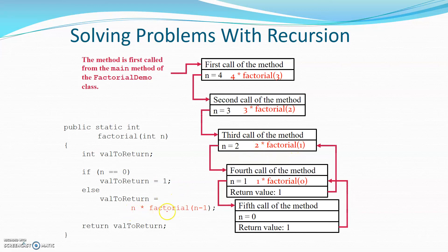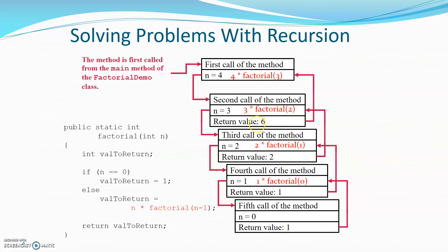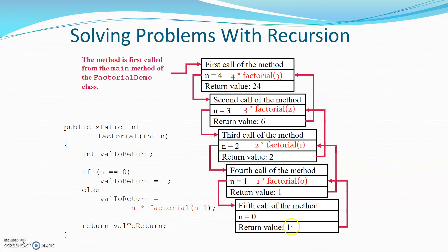Factorial(2) has the value 2, so 3 times 2 is 6 — factorial(3) returns 6. The 6 returned for factorial(3) means 4 times 6 is 24. So the final value returned by the initial call to factorial(4) is 24. What this slide doesn't show is the disappearing of these instances — once a return value is done, that instance no longer exists. Each instance disappears as its return value is passed back up the chain.